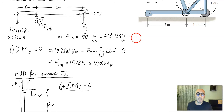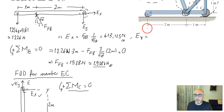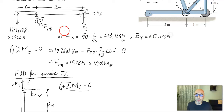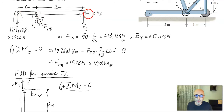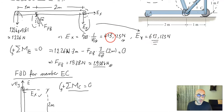For EY, writing force equilibrium in the Y direction from the GE free body diagram gives EY = 613.125 N as well. So both EX and EY equal 613.125 N, and we use the vertical component of FFB and EY in the EC equilibrium equation.